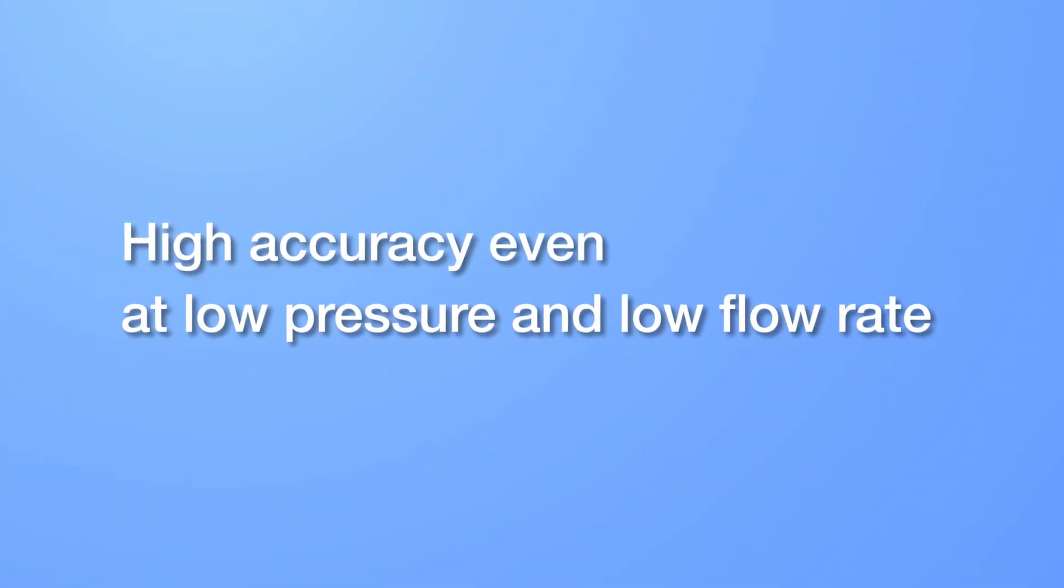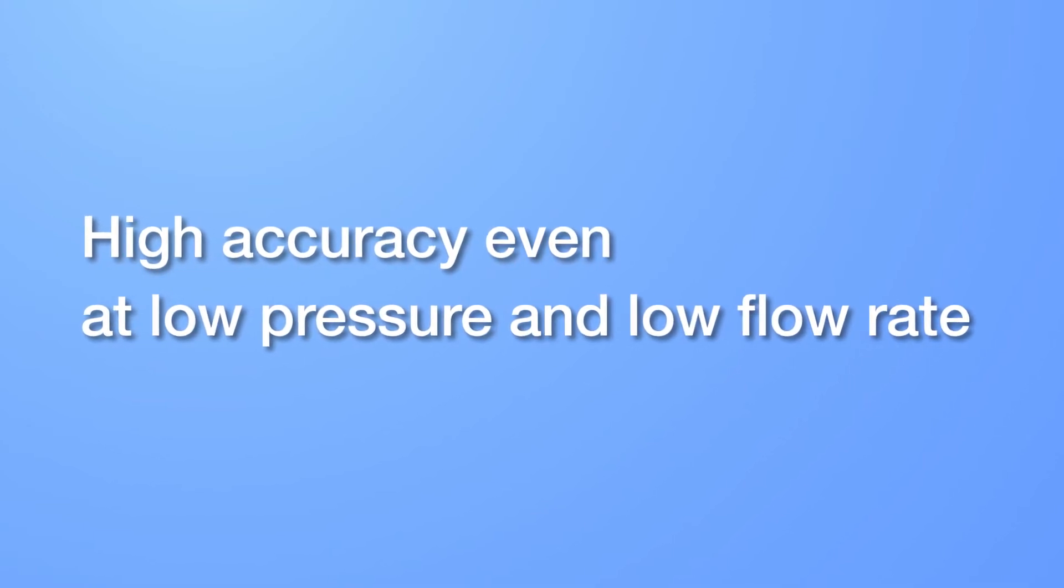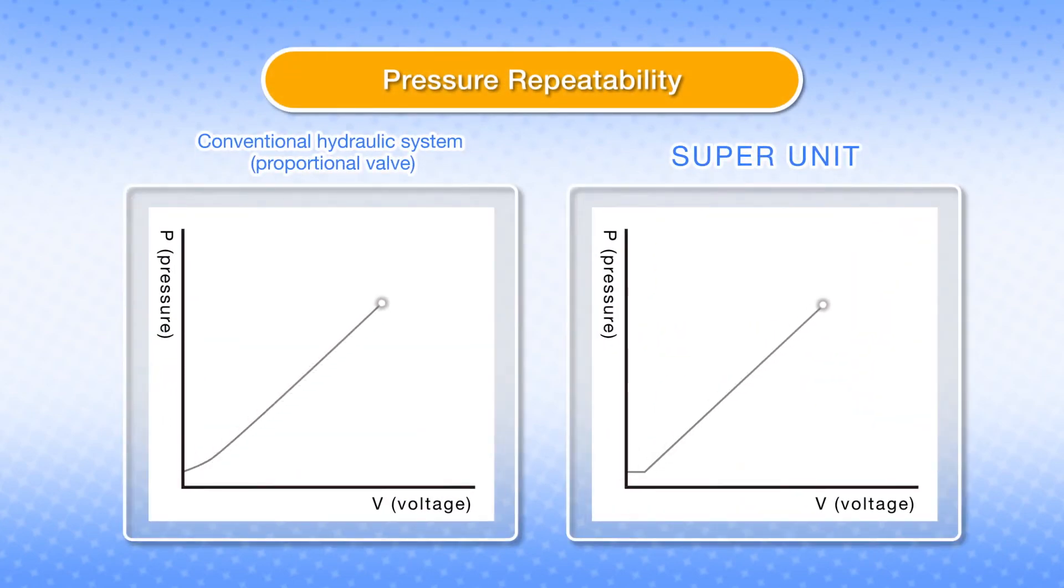The second feature of the Super Unit is that high-accuracy operation is possible even at a low pressure and low flow rate. The dispersion and control that tends to occur in operation at low pressure is hardly seen with the Daikin Super Unit.